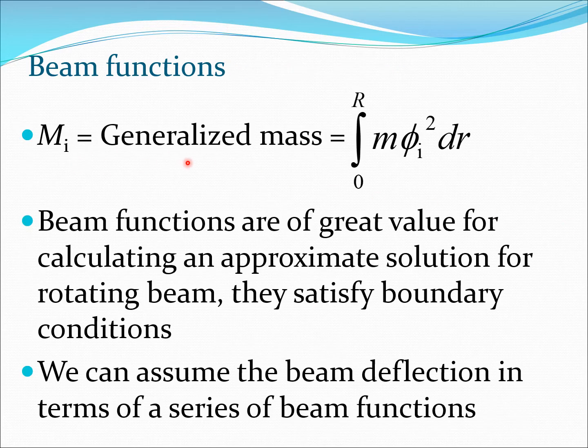So here mi is the generalized mass given as zero to r m phi squared dr. Now beam functions are enormously important for calculating approximate solutions for the rotating beam because they satisfy the boundary conditions.